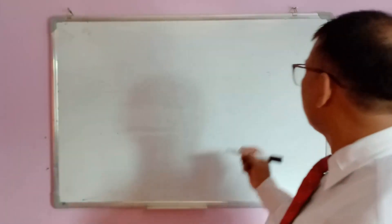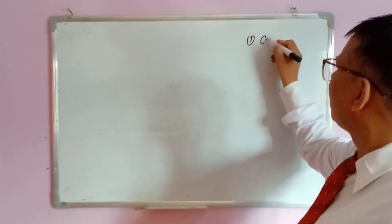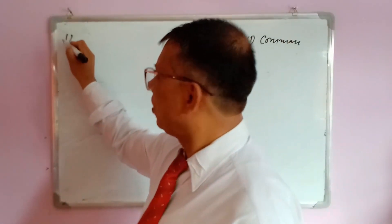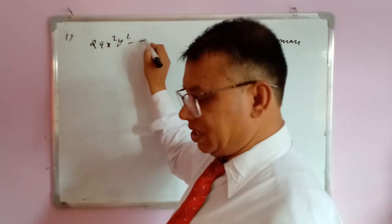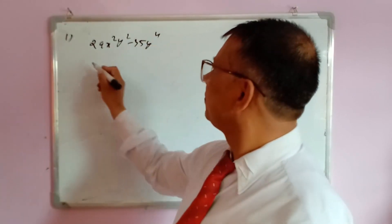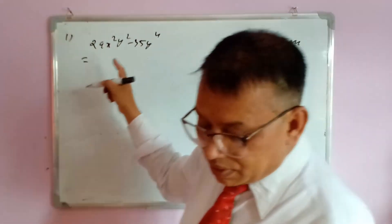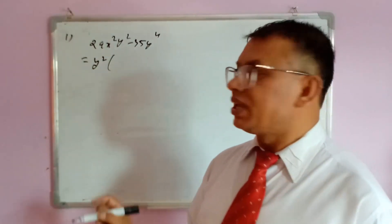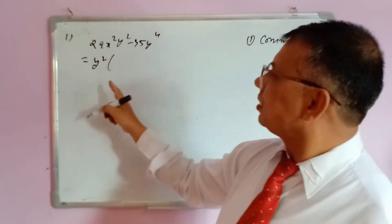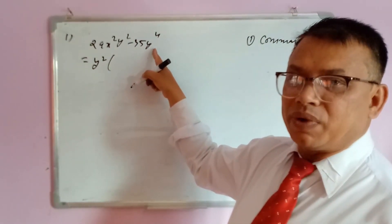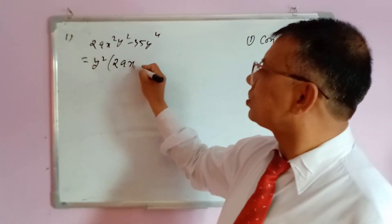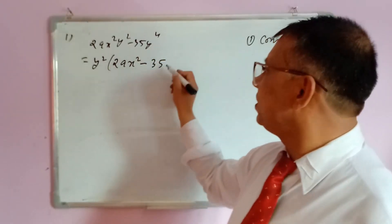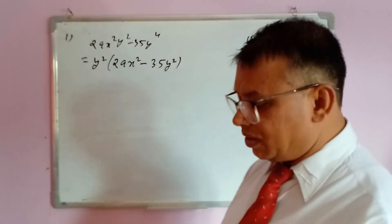There are five rules in factorization. Rule number one is the common factor. For this question — 2ax²y² minus 35y⁴ — nothing is common in 'a', nothing externally common, but the common factor is y². So y² is common; remaining after taking y² out is 2ax² from the first term and y² from y⁴.